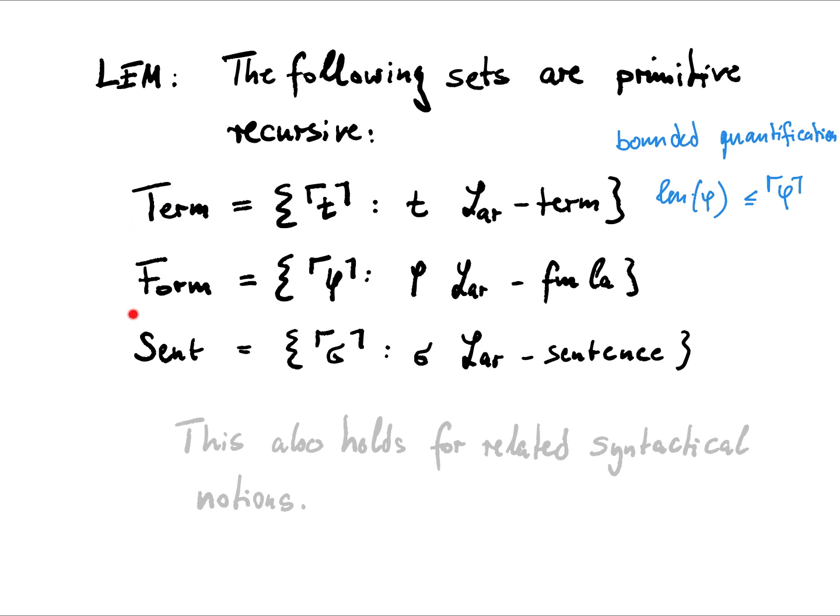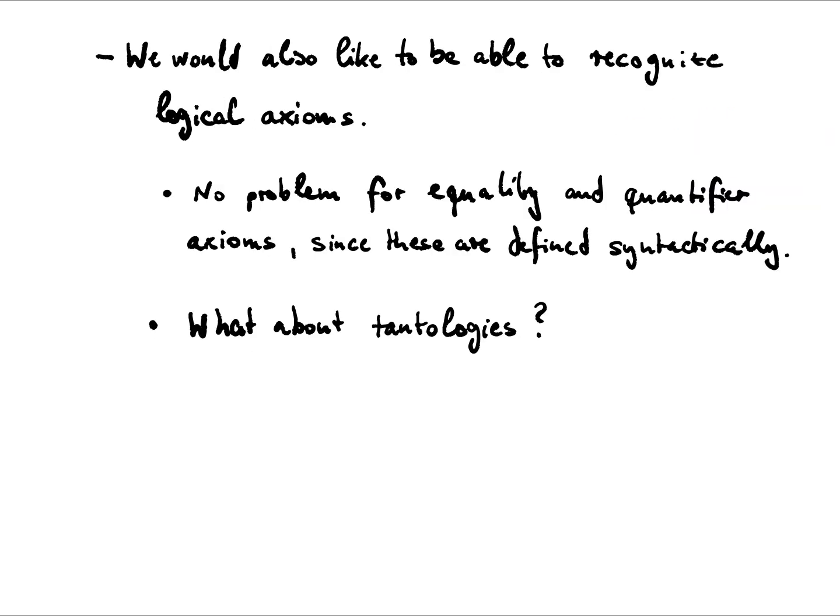Finally, this holds not only for these three sets, but it holds also for related basic syntactical notions, something like the number of free variables and so on. We would also like to be able to recognize the logical axioms for our language. And if we go back and revisit our logical axioms, we'll see it's not really a problem for the equality and quantifier axioms, since these are defined purely syntactically. So there's a syntactic recipe, how we can form these axioms, given the formula, given variables and so on. If we have a formula and we have variables, then this is an equality axiom. And since we can recognize formulas, we can therefore also recognize equality and quantifier axioms.